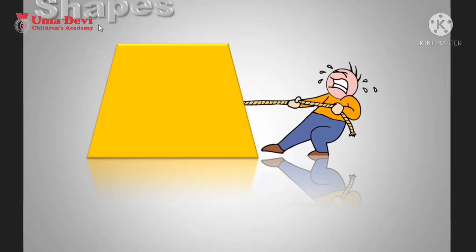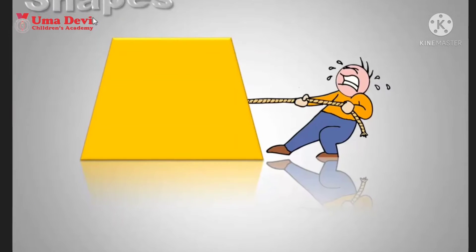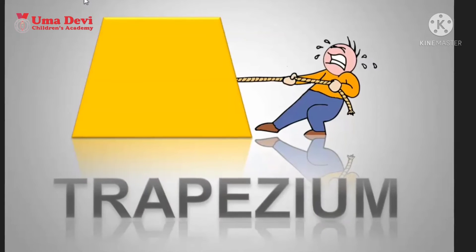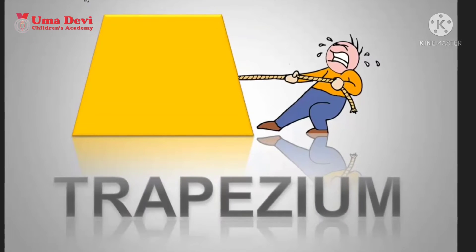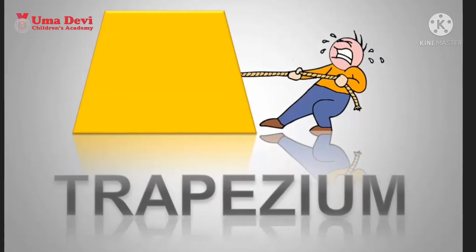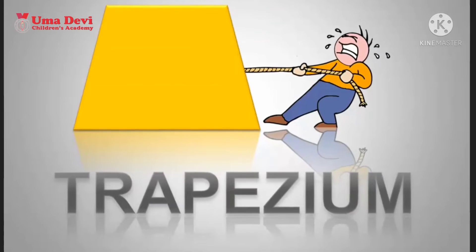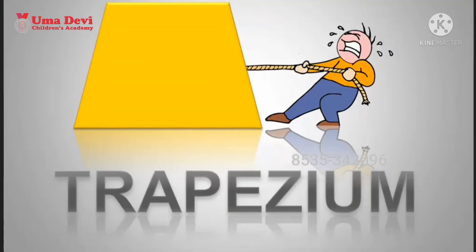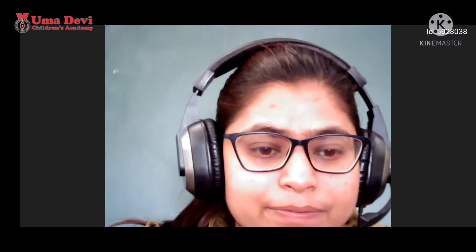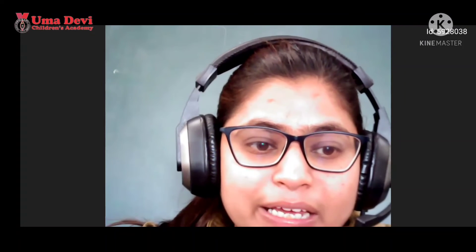Let's talk about the next shape. What is this? Trapezium. This is trapezium. Everyone, make it in your copy. Make trapezium in your copy — T-R-A-P-E-Z-I-U-M. Everyone is making trapezium. Make it.